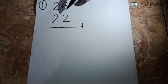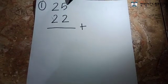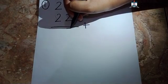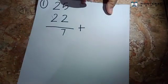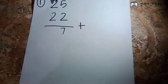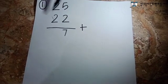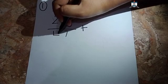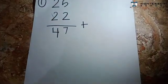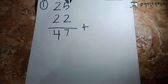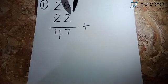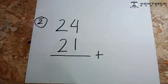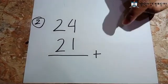To do it, remember to always count the numbers from behind. Here, 5 plus 2 equals 7. Then 2 plus 2 equals 4. So 25 plus 22 equals 47.